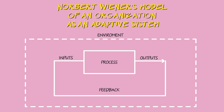Here is a basic cybernetic process diagram developed by Norbert Wiener, who is considered the father of the scientific articulation of cybernetics. It's quite simple: there are inputs, a process, outputs, and then feedback where you consider the outputs in relation to what you desired. The idea is that your inputs into the system are adjusted on the basis of the difference between your expectations and the actual results.